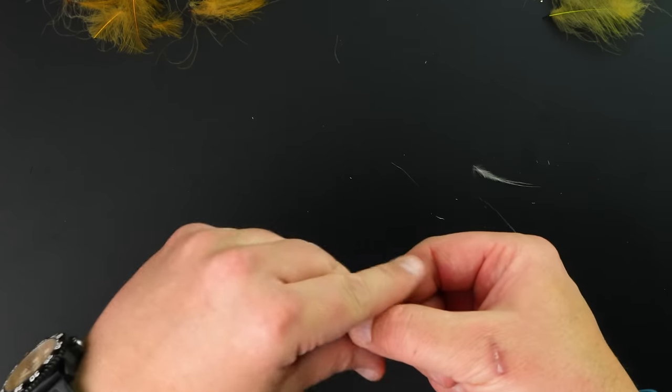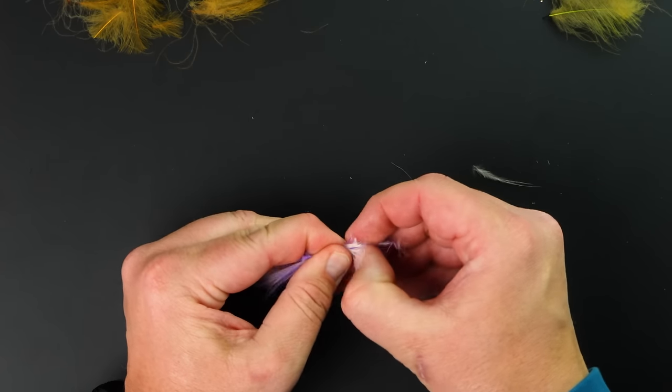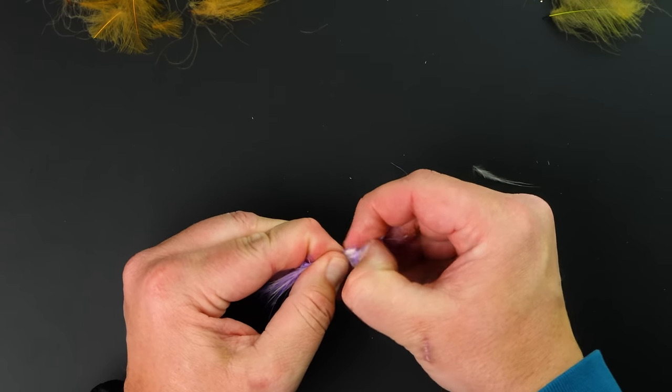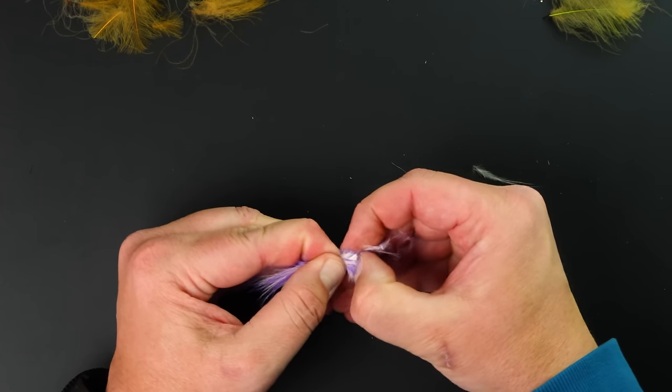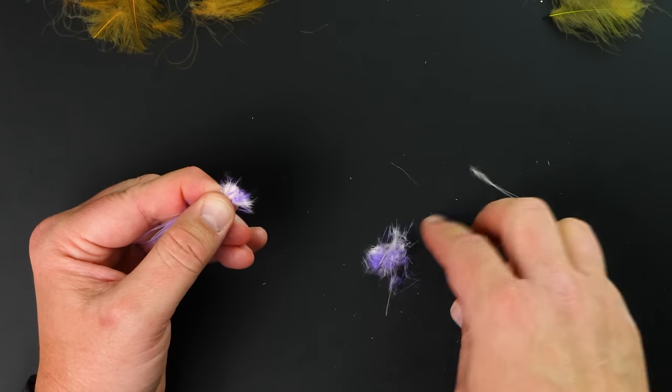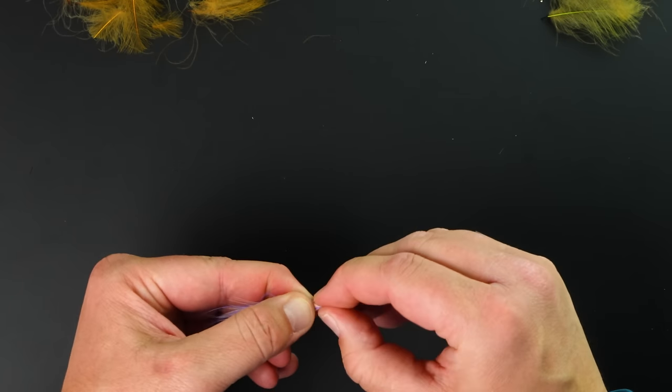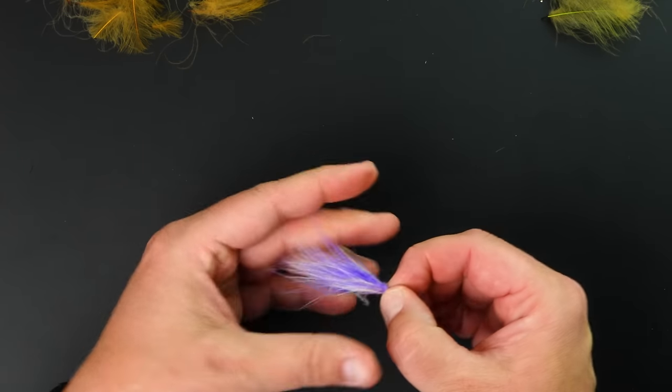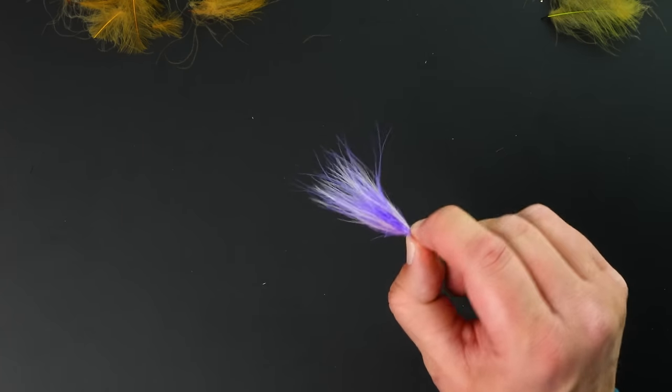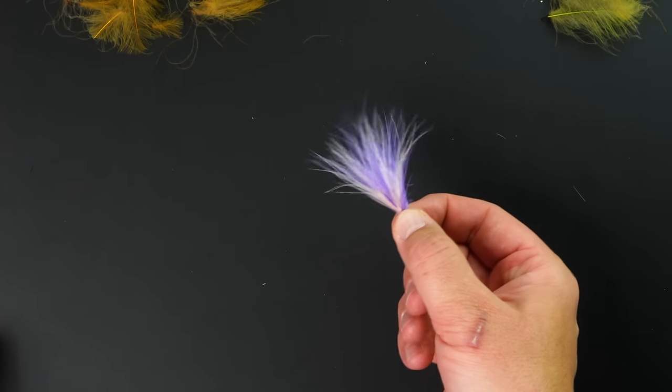If you were to tie this in, there's a big old clump of gnarliness here. Get in here and clean up some of the tips with your fingernail, just like this. If you can get a bunch of that fluff out of there, which works great as dubbing by the way, you can have a much slimmer tie-in point for all of that marabou. That's the Cotterelli Hackle Twister. I use it mostly with CDC and marabou, but it makes a really cool effect on your flies.